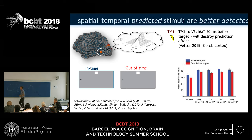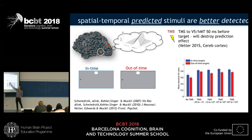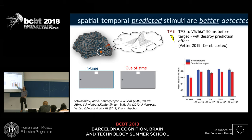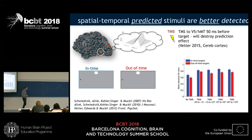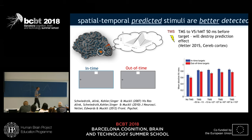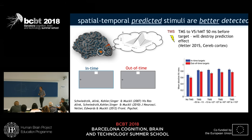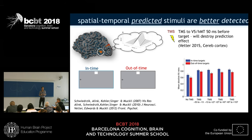We do this TMS at different time points, and only at one time point is it significantly reduced — you always have a replication of this in-time versus out-of-time frame, except in this one condition. This condition is the one in which it's a double TMS pulse, 50 to 13 milliseconds before the blinking stimulus.